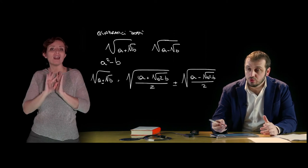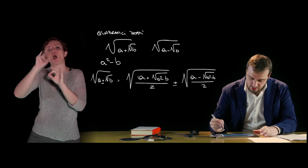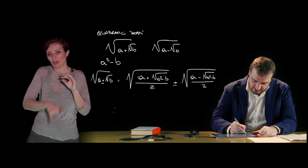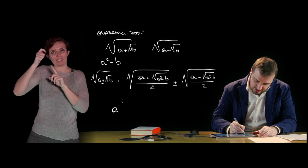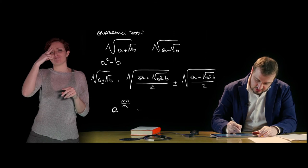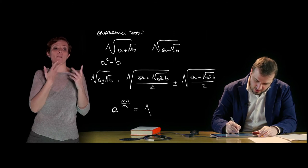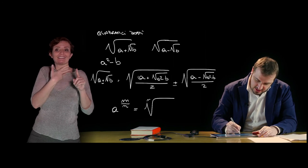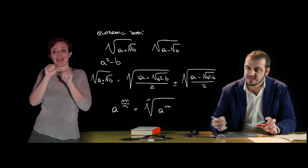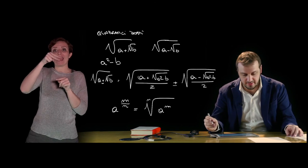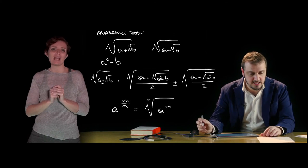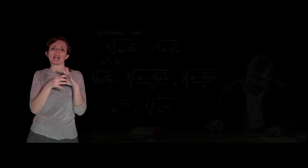Connecting back to what we saw in the previous lesson on powers: a power with a rational exponent m/n equals the nth root of a to the m — this is the link between powers and radicals.